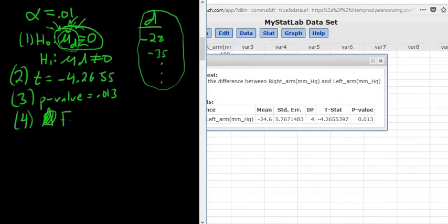So step four, we're going to fail to reject H sub zero. If the p-value is smaller, you reject. If the p-value is bigger, you fail to reject.